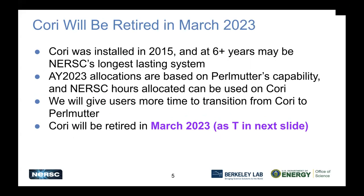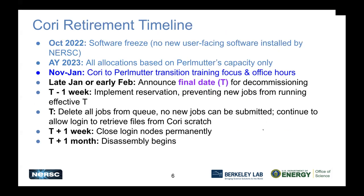As we have been announcing, CORI will be retired in March 2023. It has been here for over six years and is our longest-lasting system, producing lots of excellent science for our users. The 2023 allocation will be based on Perlmutter capability, and NERSC hours allocated can be used on CORI. There are allocations for Perlmutter CPU and Perlmutter GPU. The Perlmutter CPU allocation is shared with usage on CORI to give users more time to transition their applications. As of now, we haven't decided on an official date — we'll call it capital T — in March 2023, and we'll use this T in the next slide to share the retirement timeline.